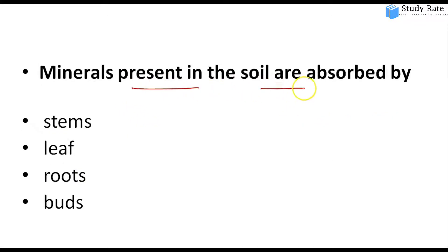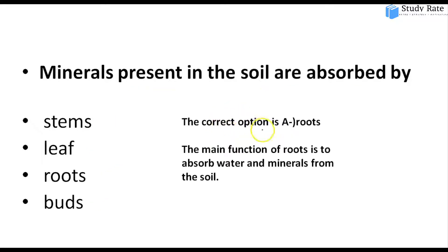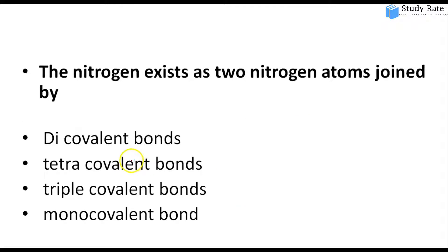Fourth question: Which part absorbs minerals present in soil — stem, leaf, root, or fruit? Since root is in direct contact with soil, root hairs mainly help in absorbing water and minerals from the soil.